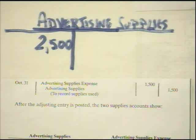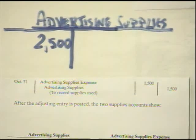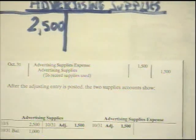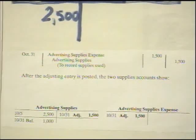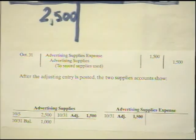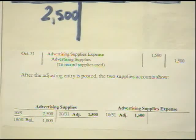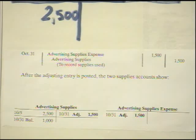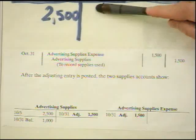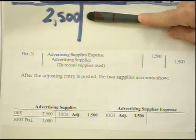We send an employee to the back room to count how much supplies are left, and I would not expect $2,500 to be in there because we've used them throughout the month. Conceptually, we should have made an entry every time somebody took out supplies, but that could be very cumbersome and not cost effective. So we wait till the end of the month, go back, count them up, and there's only $1,000 left of supplies.